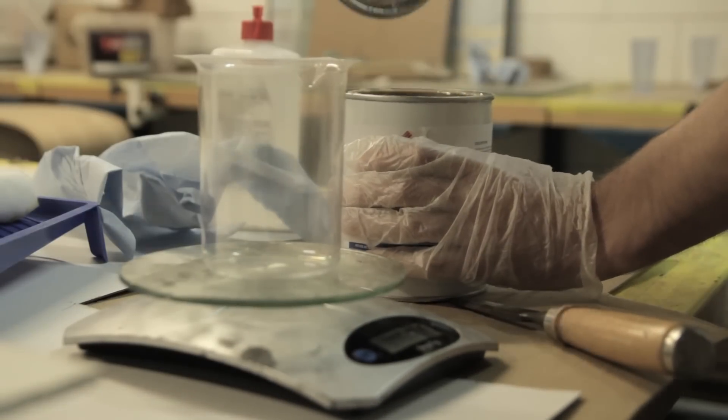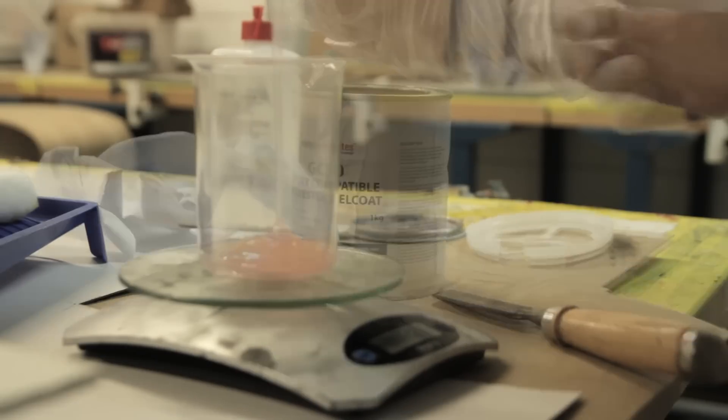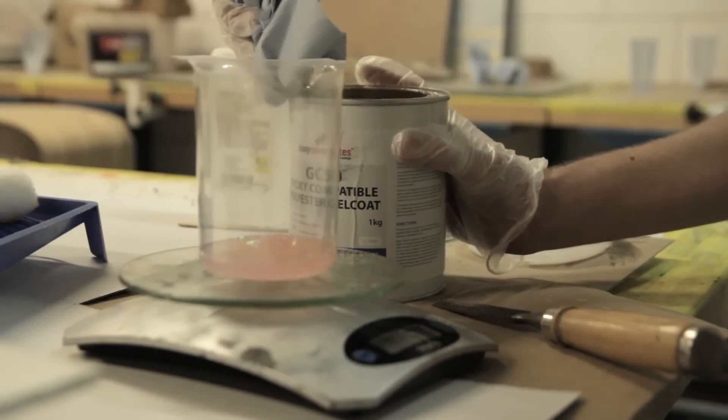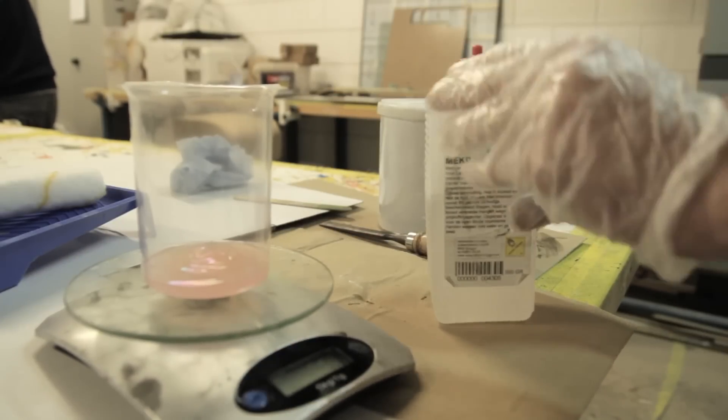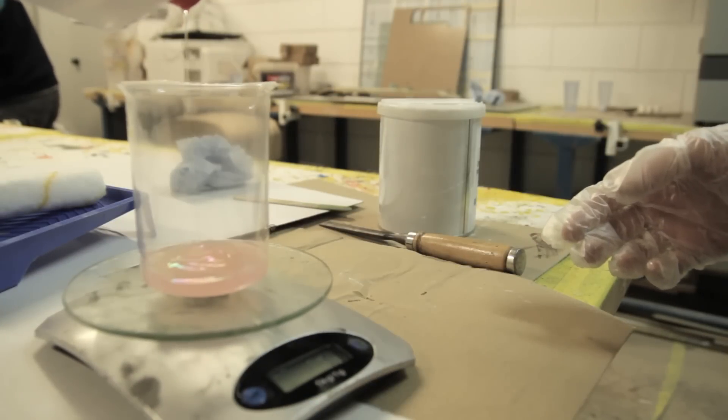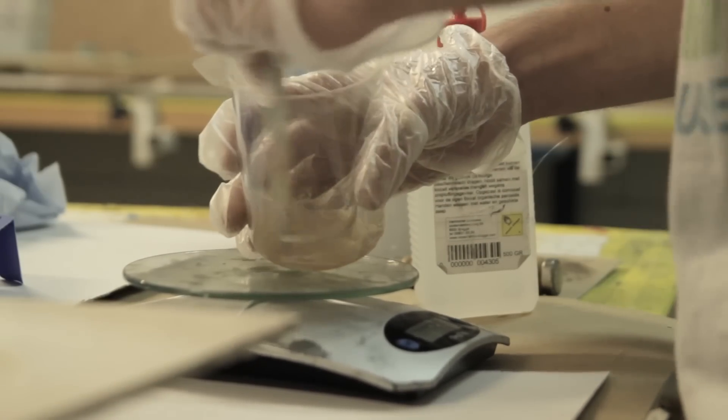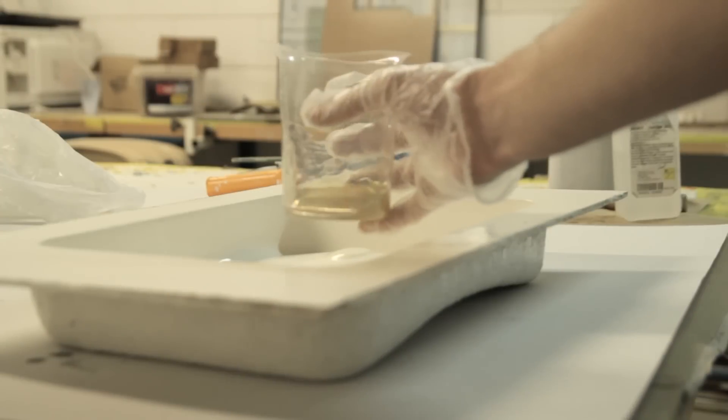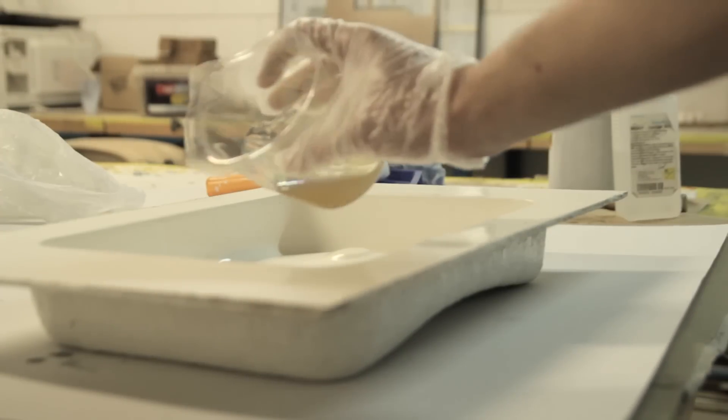The first layer in this project is the gelcoat. I'm using the GC50 gelcoat from Easy Composites. The biggest thing is it's compatible with polyester and epoxy resins, so I'll be infusing an epoxy resin on top of this one.